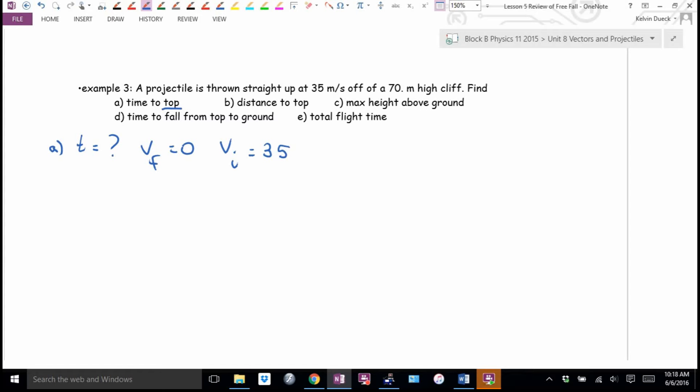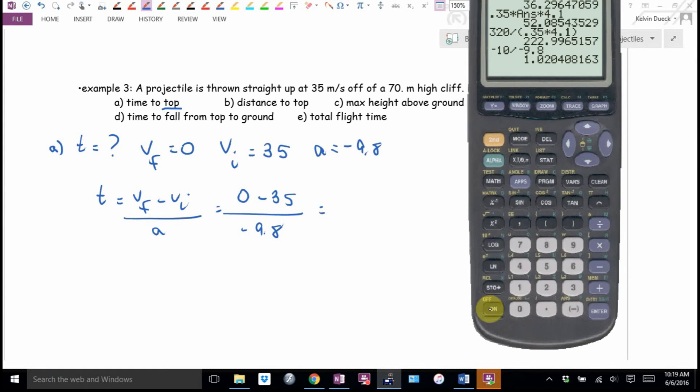We can do the same thing again. T is going to be VF minus VI over A. It's going to be 0 minus 35 over negative 9.8. Or I could have canceled the VF. It's going to be negative 35. Negative. Try that again. Negative 35 divided by negative 9.8. 0 minus 35 is just negative 35. It takes 3.57 seconds to get to the top.